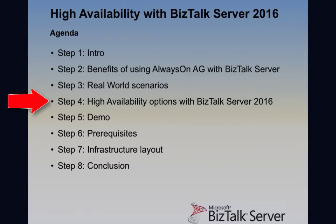There are several options for high availability within the BizTalk Server 2016 environment. With Windows Server 2016, we can make use of the failover clustering feature right out of the box. The concept of the failover cluster in Windows Server dates back to Windows NT 3.5. Since then, the Windows Failover Cluster has made tremendous improvements and now supports newer concepts like SQL Server Always On Availability Groups. The failover cluster feature in Windows Server 2016 covers both levels — the service layer as well as the data layer.